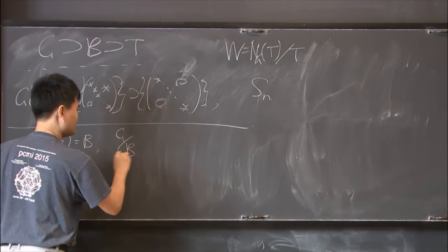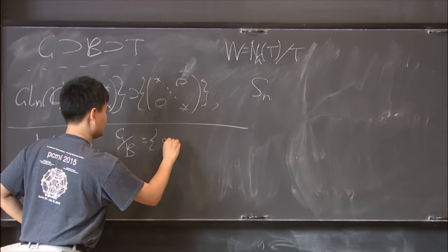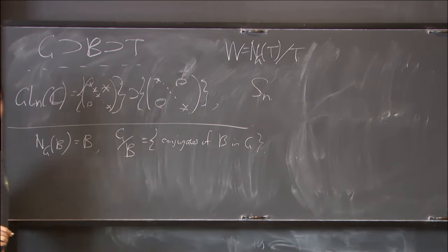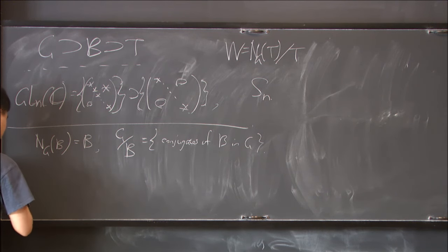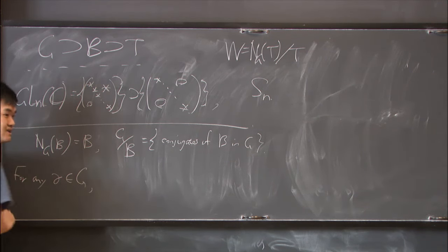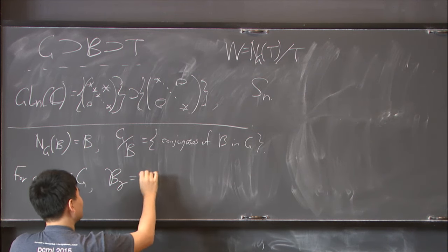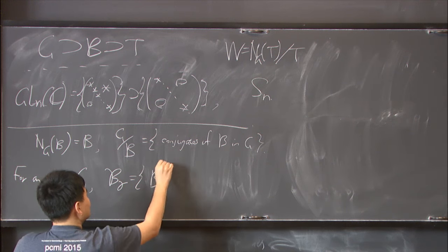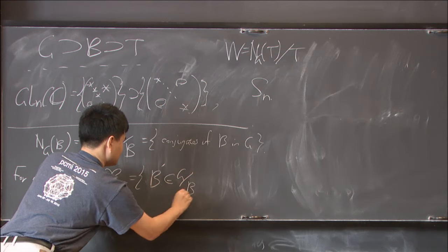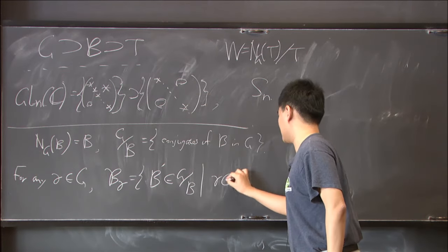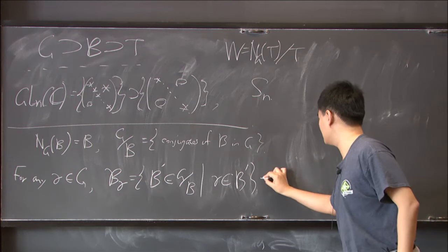this means G/B, the flag variety parameterizing conjugates of B in G, is also a projective variety over C. And then for every gamma inside G, the Springer fiber is B_gamma, which consists of those conjugates of B, which I will write this to mean a conjugate of B parameterized by G/B, for which gamma is inside B prime. So this is a Springer fiber.